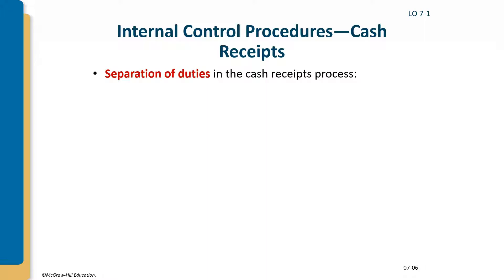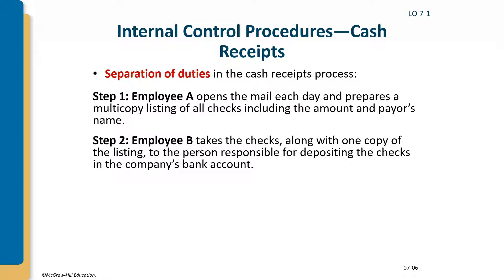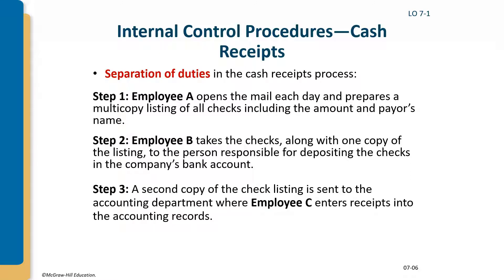When it comes to internal control procedures, we focus most on separation of duties for cash receipts. For example, at the United Way of Wyoming Valley, Employee A opens the mail and prepares a multi-copy listing of all checks including amounts and payer names. Employee B takes the checks and one copy to the person responsible for depositing them, while a second copy goes to accounting where Employee C enters receipts into the accounting records.